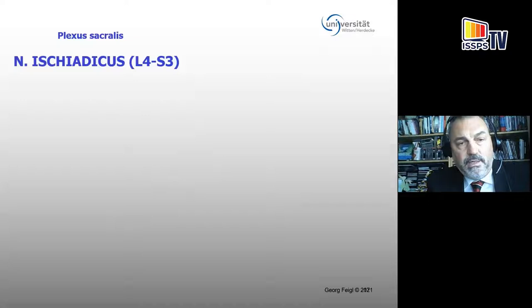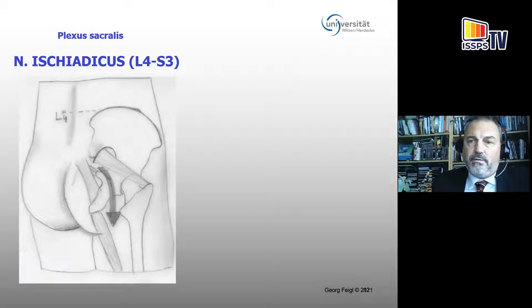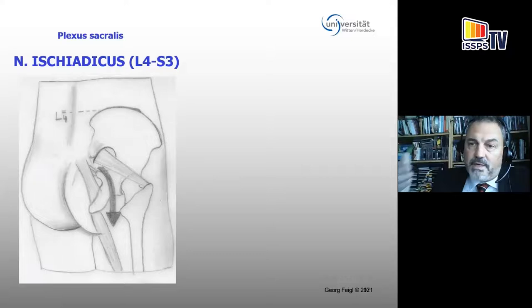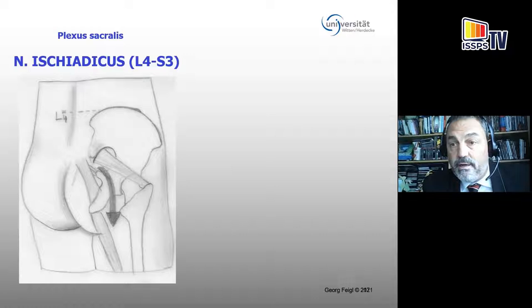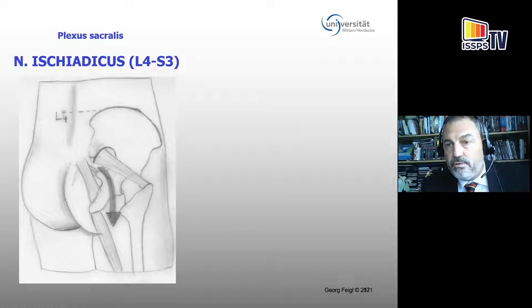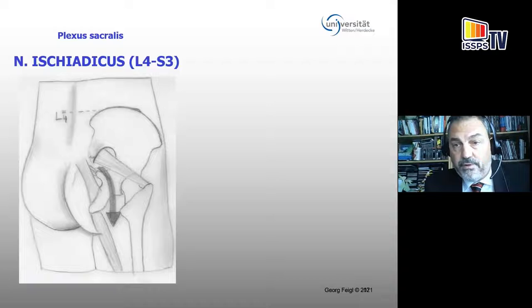The sciatic nerve exits through the so-called infrapiriformal foramen — you get the greater sciatic foramen, and then the piriformis muscle exits to reach the trochanteric fossa. Underneath, you have the infrapiriformis foramen, which is quite a small foramen, but many structures run out through it: the sciatic nerve, the inferior gluteal artery and nerve, the internal pudendal artery and the pudendal nerve, and the posterior femoral cutaneous nerve. So you see a lot of structures running through to go to the distal areas.